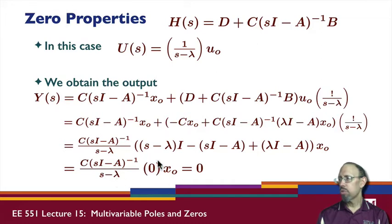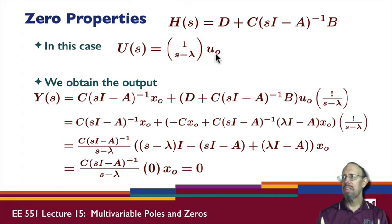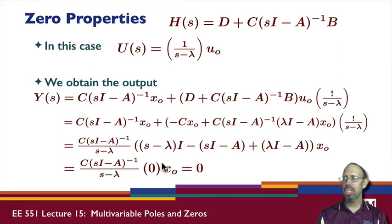All of this quantity is equal to zero. With this initial condition and this input to our system, the output is identically zero — we get exactly zero. So if we use the direction and the value of our zero, we apply a non-zero input with a non-zero initial condition, and the output is identically zero for all time. That's the zero property — a property of invariant zeros.